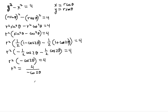This is where you have to be careful. Notice that r squared is not necessarily equal to a positive number. When you solve for r by taking the square root of both sides, note that 4 divided by negative cosine 2 theta can be written as negative 4 secant 2 theta, since 1 divided by cosine is secant.